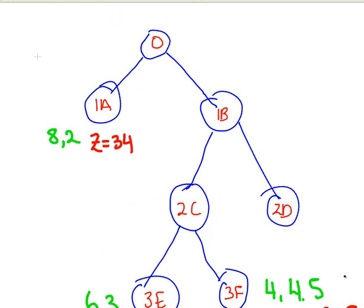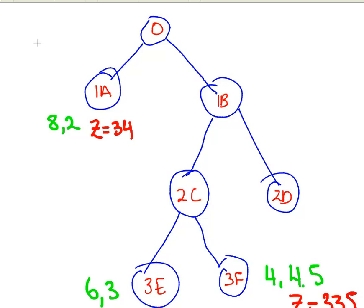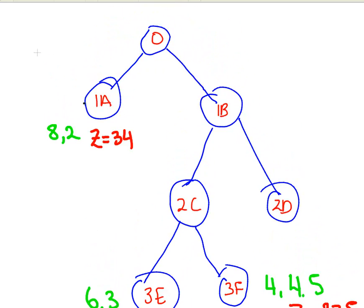So this is the overall state of play where I am at right now. Earlier on, we found that at node 1A, we had an integer solution, x1 is equal to 8 and x2 is equal to 2. Our realization of the objective function there is 34.